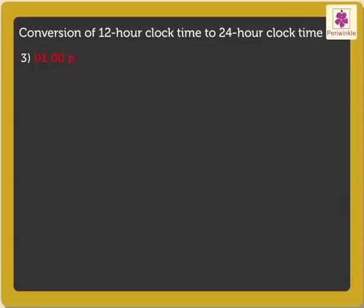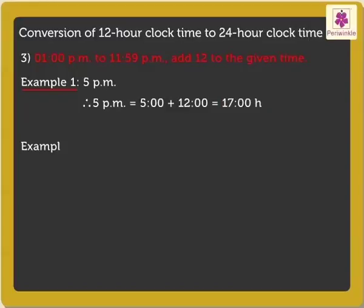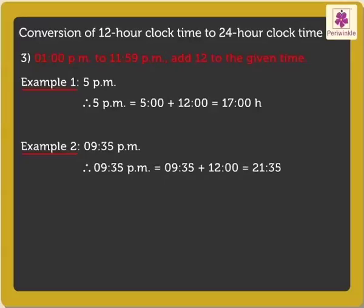For the time from 1 PM to 12:59 PM, add 12 to the given time. For example, change the time 5 PM to the 24-Hour Clock time. 5 PM is equal to 5 plus 12, which is equal to 17. We write it as 17:00H and read it as 1700 hours. 9:35 PM will be equal to 9:35 plus 12, which is equal to 2135 hours.